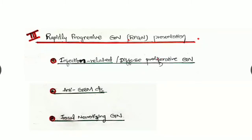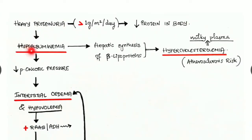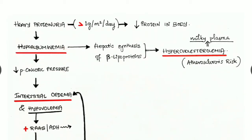Now the pathophysiology of nephrotic syndrome: heavy proteinuria causes hypoalbuminemia — reduced albumin levels in the blood — which reduces plasma oncotic pressure. Hypoalbuminemia also stimulates hepatic synthesis of beta-lipoproteins, sending a message to the liver to produce more beta-lipoproteins. These beta-lipoproteins are transporters of cholesterol, which in turn causes hypercholesterolemia.